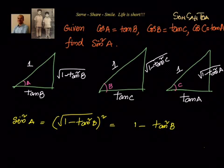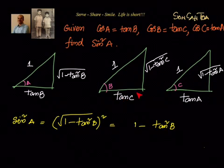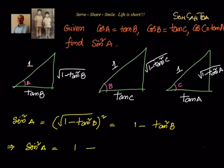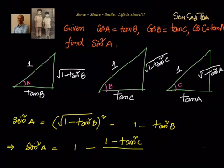Since we have tan squared B, we move to the second triangle to write tan B in terms of C. Tan B is opposite over adjacent, and squaring it gives tan squared B equals (1 minus tan²C) divided by tan²C.